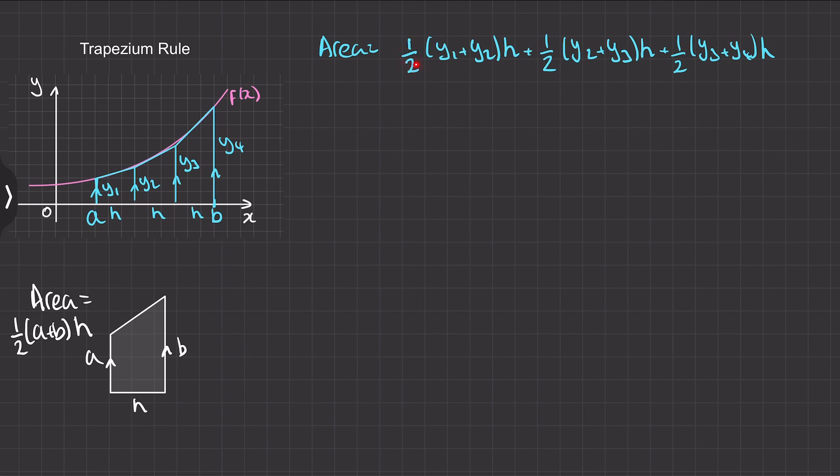And then for our third trapezium we've got the same one half of y3 plus y4 times the h. So now you can see we can factor out the halves and the h, so the area will be one half of h which is easier to write as h over 2, and then we've got y1 plus y2 plus y2 and y3 plus y3 and y4.